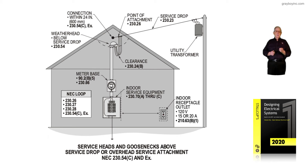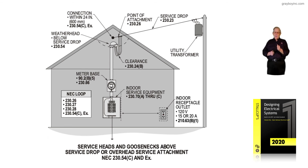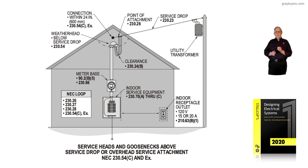The NEC loop recommends reviewing 230.26, 230.27, 230.28, and the exception to 230.54C, because due to the installation and construction of the building, you cannot place the drop 6 to 12 inches below the weatherhead and have the weatherhead above the point of attachment of the service drop. So figure 6-32b is illustrating the exception and the application of the exception to 230.54C.